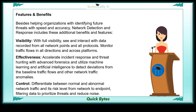Effectiveness: Accelerate incident response and threat hunting with advanced forensics, and utilize machine learning and artificial intelligence to detect deviations from the baseline traffic flows and other network traffic anomalies. Control: Differentiate between normal and abnormal network traffic and its risk level from network to endpoint, filtering data to prioritize threats and reduce noise.